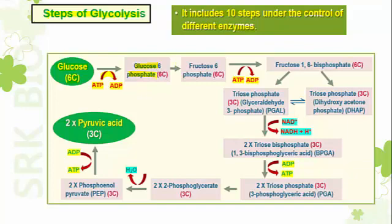Glucose-6-phosphate is also a 6-carbon compound. With the help of isomerase, glucose-6-phosphate is converted into fructose-6-phosphate, which is also a 6-carbon compound.